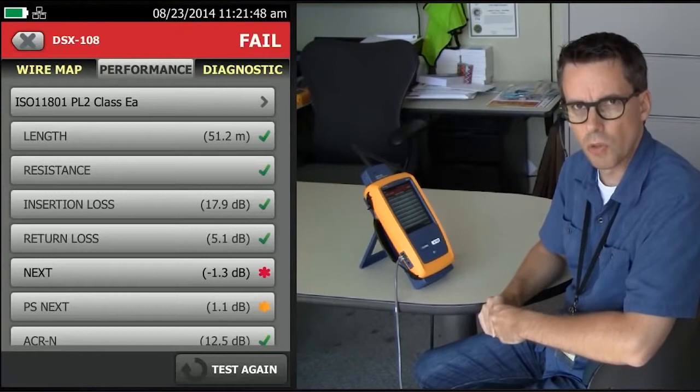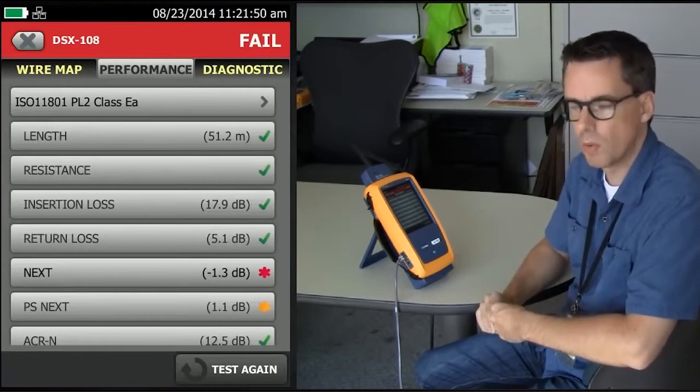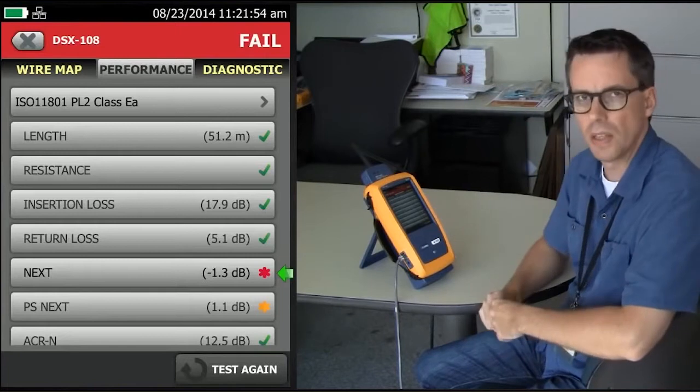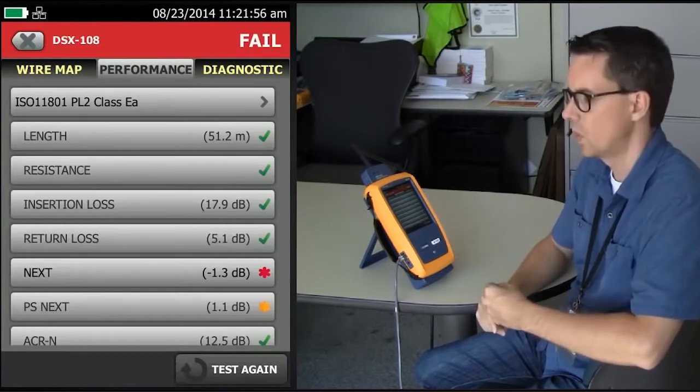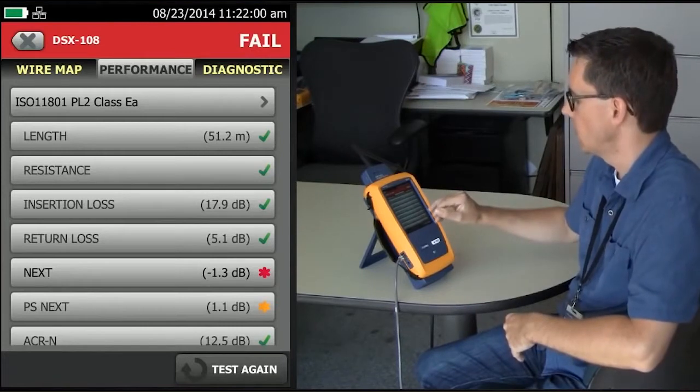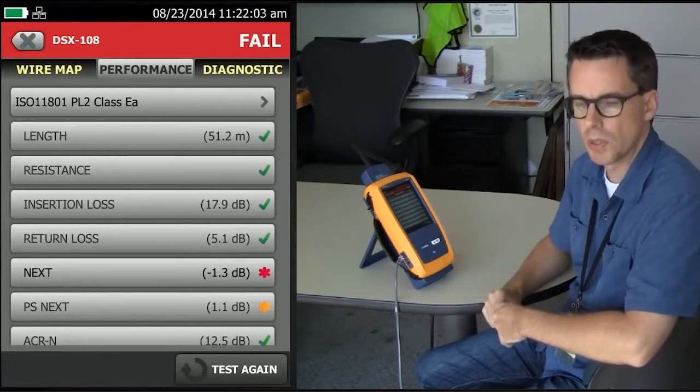In this example, we see that crosstalk failed with a margin of minus 1.3 dB. That red asterisk to the right-hand side indicates it's a marginal fail. That's within the accuracy of the instrument. When it comes to failing, a fail is a fail, so we need to diagnose this.